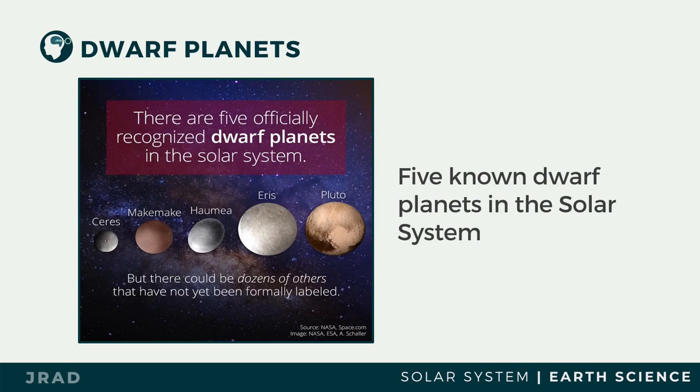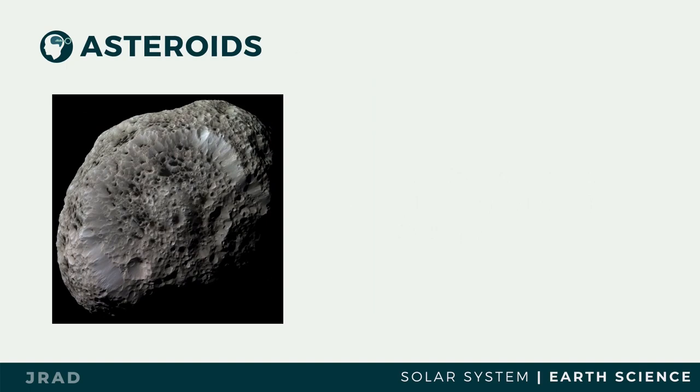There are five recognized dwarf planets in the solar system: Ceres, Makemake, Haumea, Eris, and Pluto.